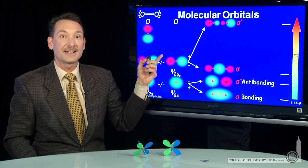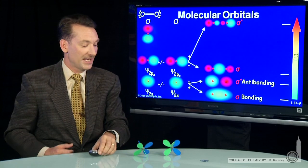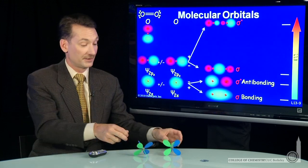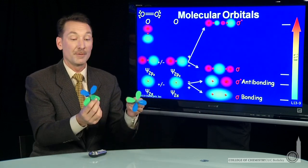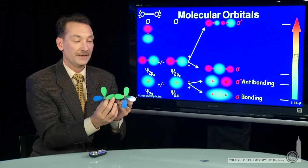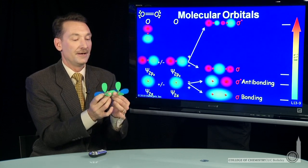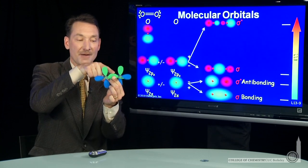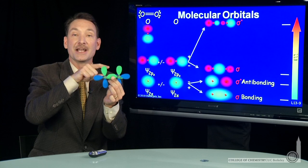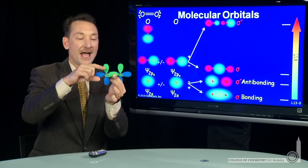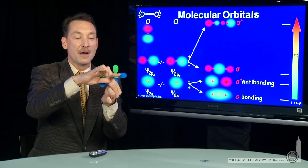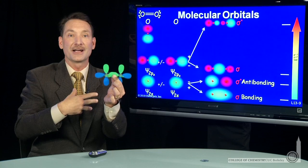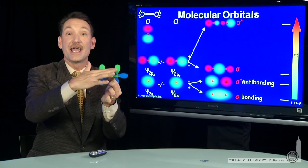Now, let's look at the px and the py. The px and the py lie in front and behind and above and below the internuclear axis. And you can see that on a model when I bring together and add my orbitals appropriately here.